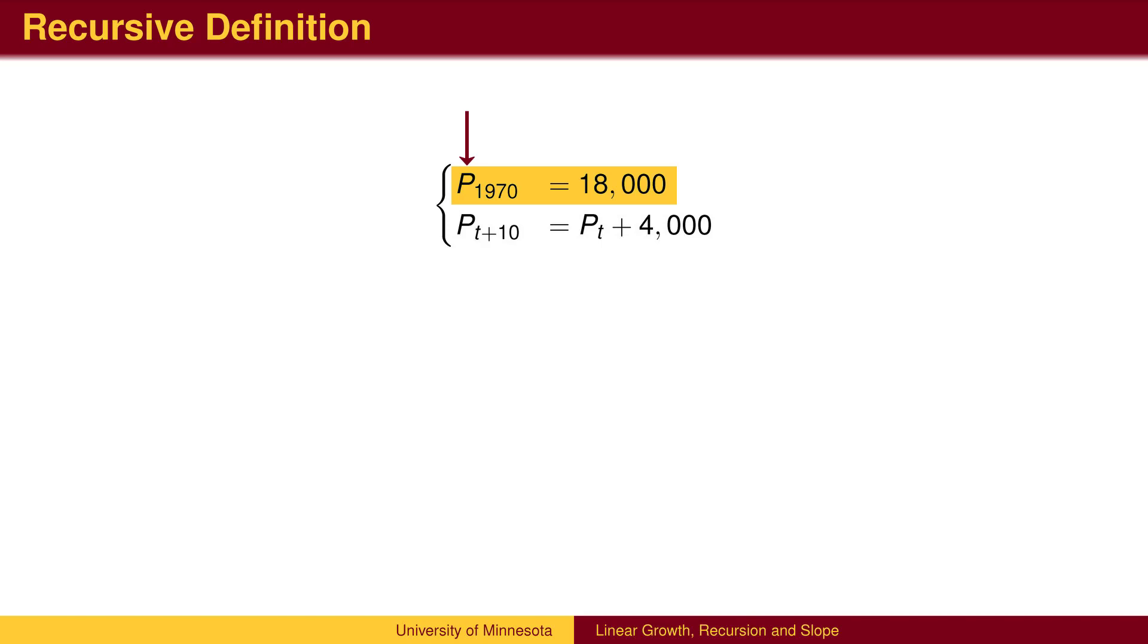When we graph this function, the population will be measured on the vertical axis. In many fields, this quantity will be called the dependent variable, dependent since the population depends on time.